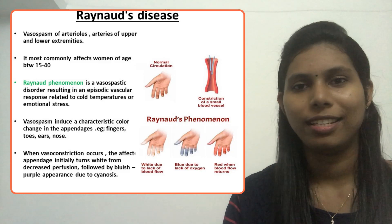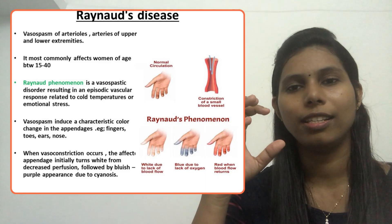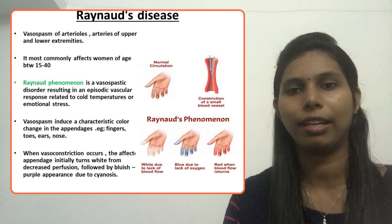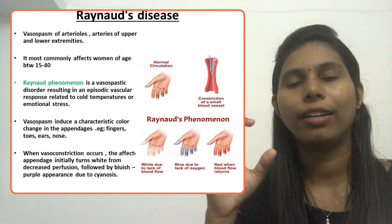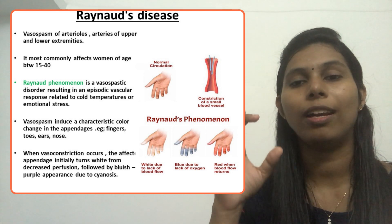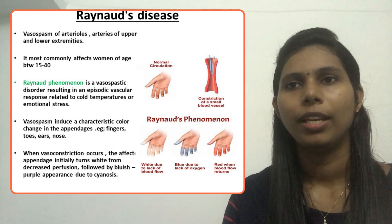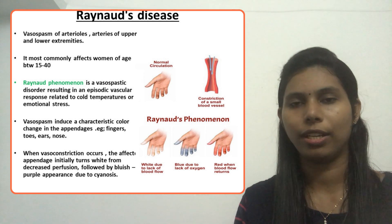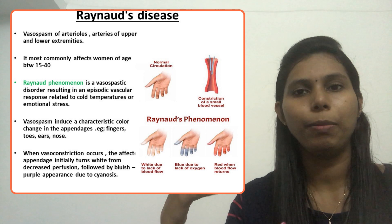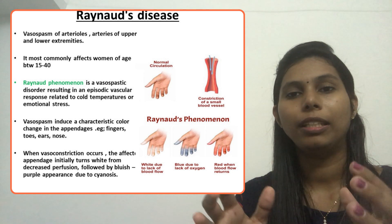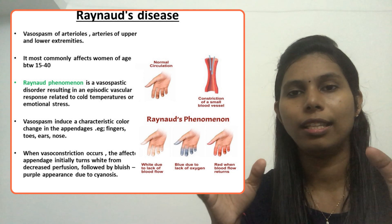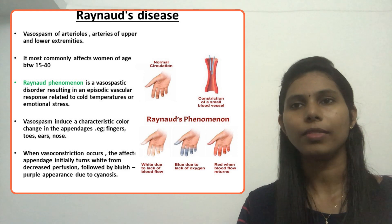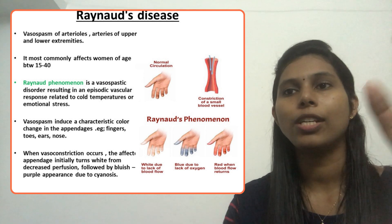What do you mean by Raynaud's disease? It is a vasospasm of the arterioles and arteries of the upper and lower extremities. It most commonly affects women between the ages of 15 and 45 years, though other people can also get the condition. The more common incidence is usually seen in women in that age group.